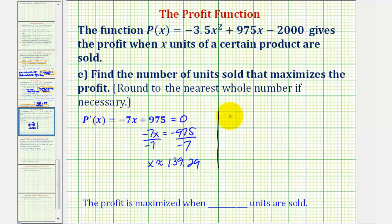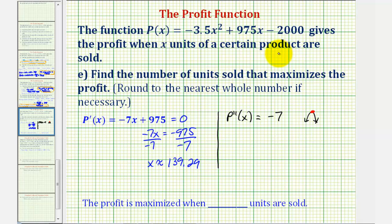The profit function is a quadratic with a negative leading coefficient — a downward-opening parabola — so this x value maximizes the function. Alternatively, using the second derivative test: p double prime of x equals negative seven, which indicates the function is always concave down, confirming this critical number is a maximum. So the profit is maximized at approximately x equals 139.29. Since x represents the number of units sold, we round to the nearest whole number: x approximately equals 139. The profit is maximized when 139 units are sold.